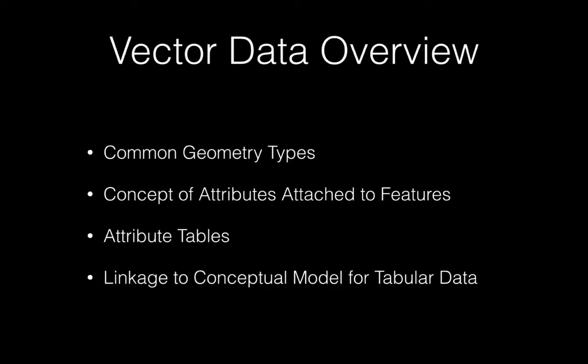So as we think about vector data, there are four topics we're going to cover today. First, the common geometry types that you're likely to encounter when working with vector data. We're going to discuss the concept of attributes as they are attached to features within vector data sets. We're going to actually view an example of an attribute table and think about the structure of attribute tables as it relates to database specifications. And finally, we're going to think about a linkage between essentially tabular data that you may already have and a conceptual model for linking those tabular data into a vector data model.